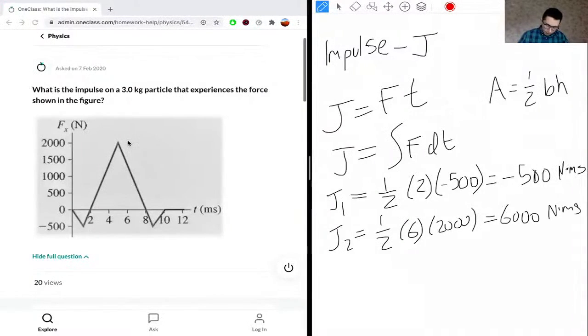J3, the last triangle, has a base of 2. One-half times 2 times negative 500, which is the height, gives us negative 500 Newton-milliseconds.